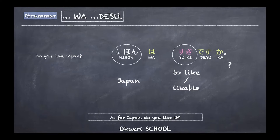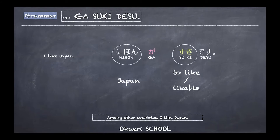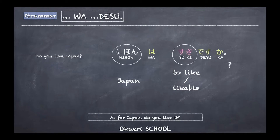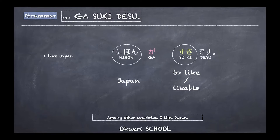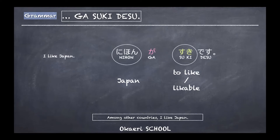When you state that you like something — for example, I like Japan — you use a different particle. Instead of wa, you use ga. So: nihon ga suki desu. This translates roughly as 'among other countries, I like Japan.' When talking about something you like, the thing you like is always followed by ga.